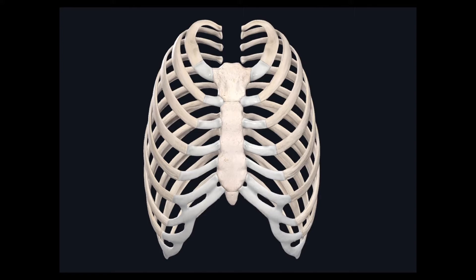The first thing I want to go over are the different parts of the thoracic cage. The thoracic cage is made up of 12 pairs of ribs, in addition to the sternum as well as the thoracic vertebrae. All these different parts make up the thoracic cage. The first part I want to discuss are the ribs.